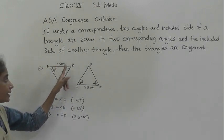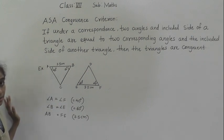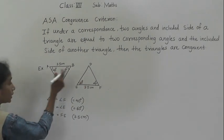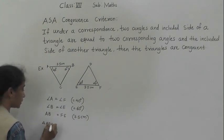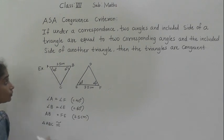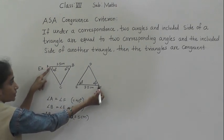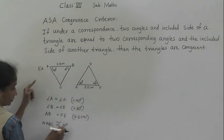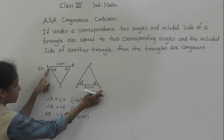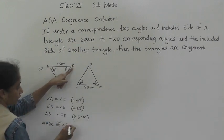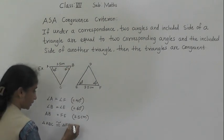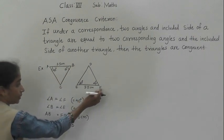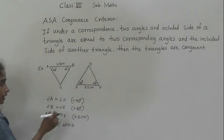With which criteria are they congruent? Angle-side-angle. Triangle ABC is congruent to triangle FED — F corresponds with A, B corresponds with E, C corresponds with D — so triangle ABC is congruent to triangle FED.